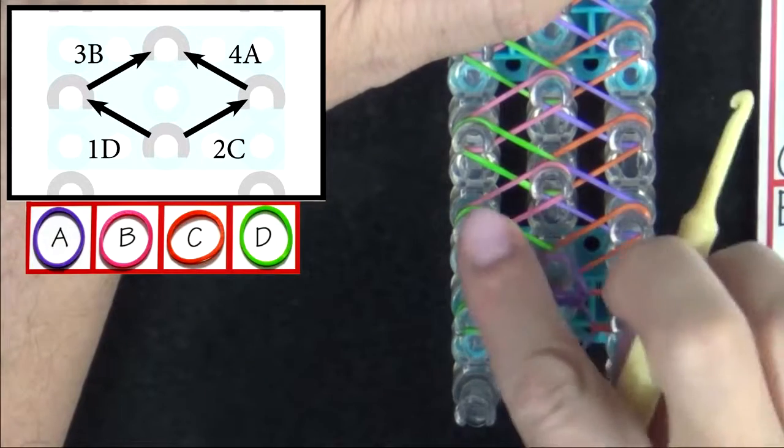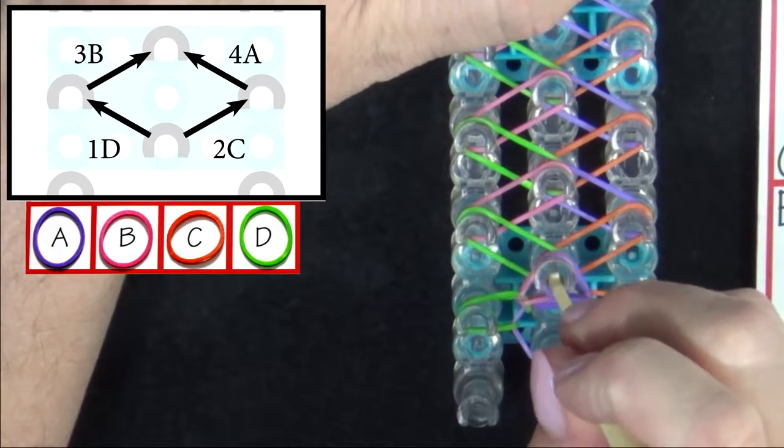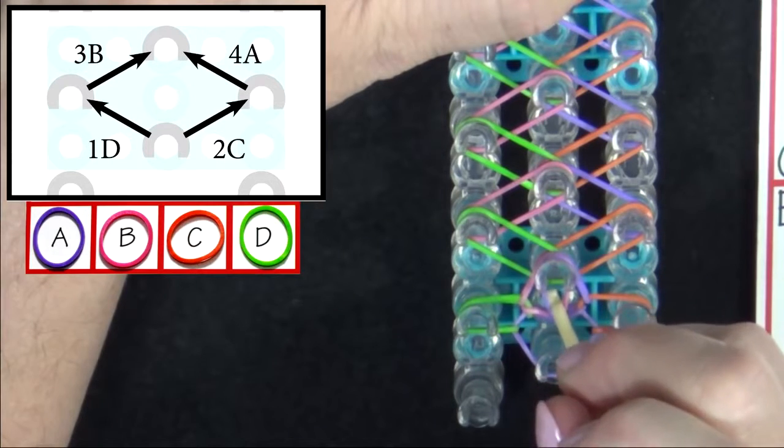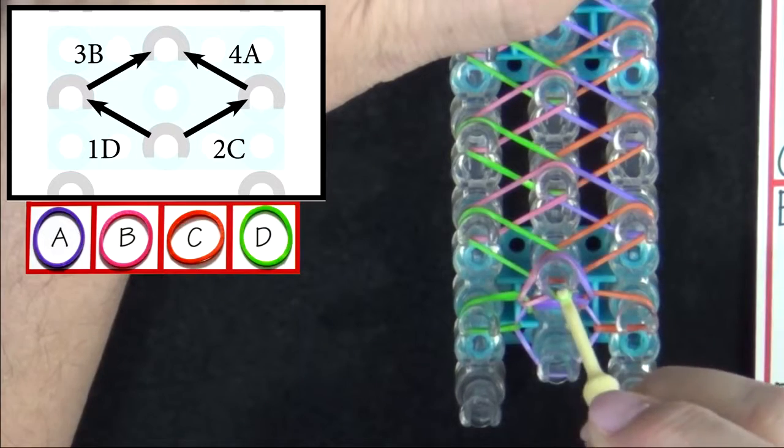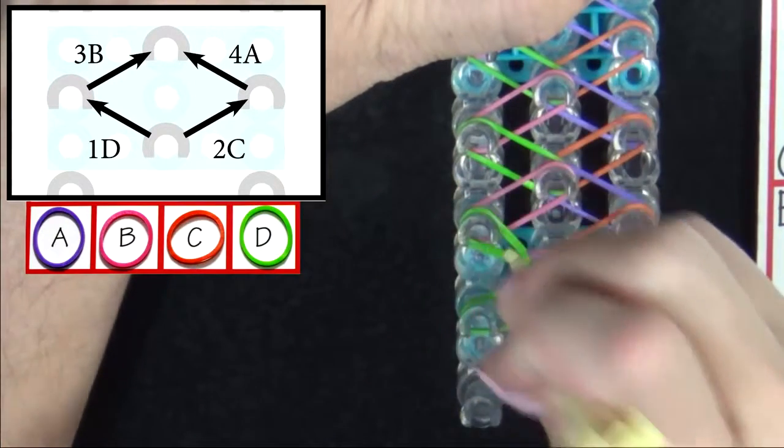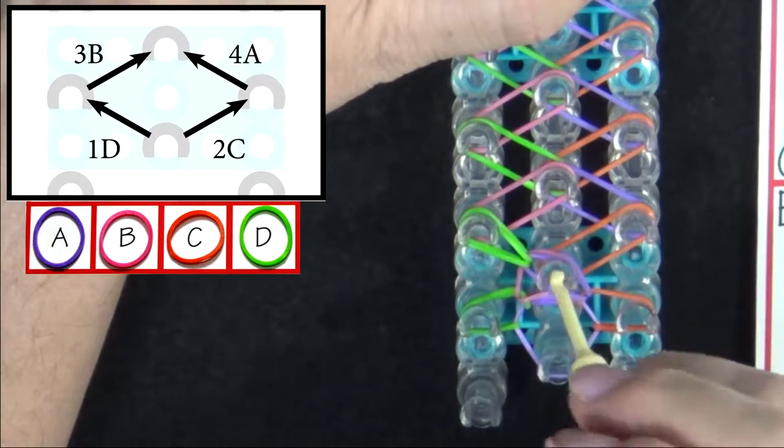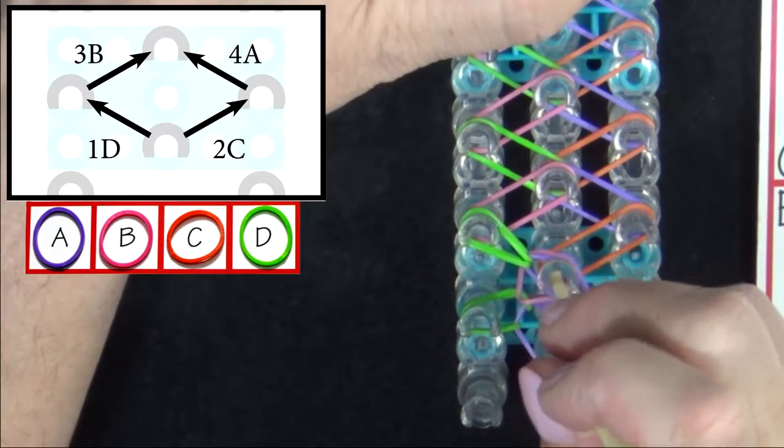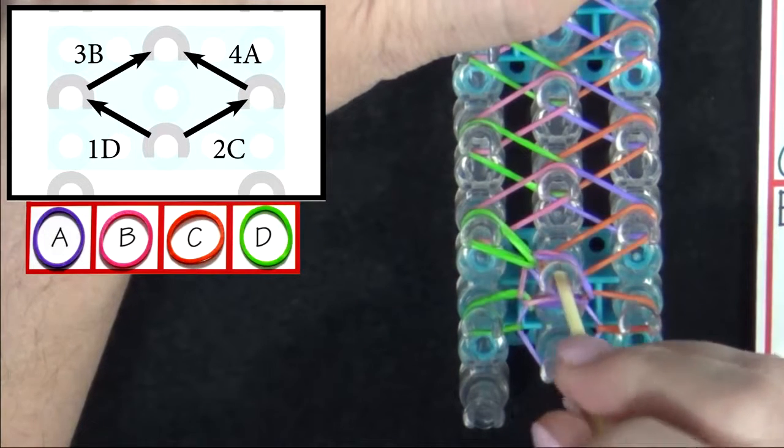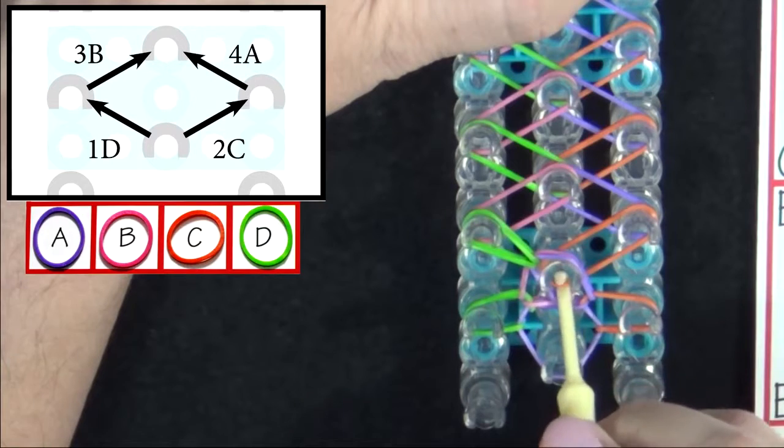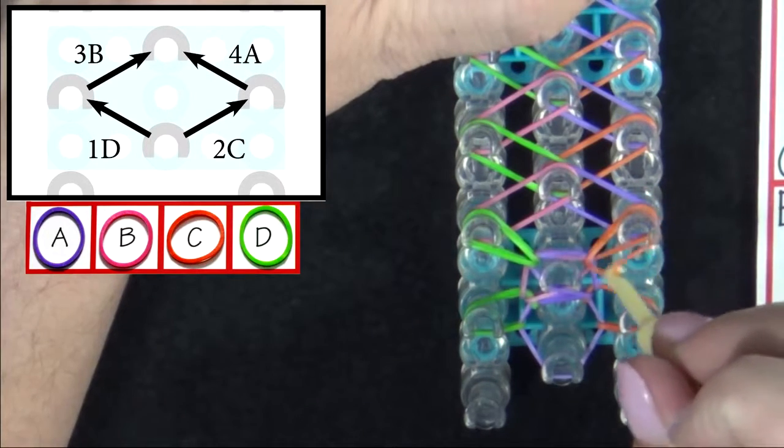We'll do that again. Band 1D. Reach into the channel of the pin. Pull all the bands above that back. With your hook you're going to grab the D band and pull it out to the left. Band 2C. You'll do the same thing. Reach into the channel of that pin. Pull all of the bands above your C band back. Grab the C band and loop it to the right.